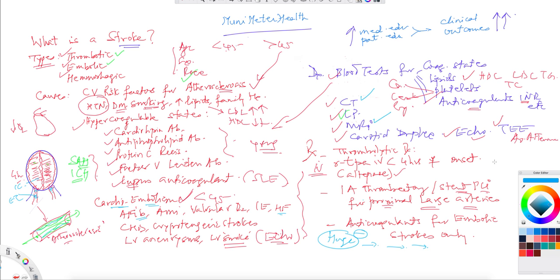For long-term, patients can be on anticoagulation provided their INRs could be monitored. In a nutshell, you learned about the three kinds of strokes: thrombotic, embolic, and hemorrhagic, and of course numerous cardiovascular risk factors including hypercoagulable states and cardioembolism, which are the major causes for strokes.